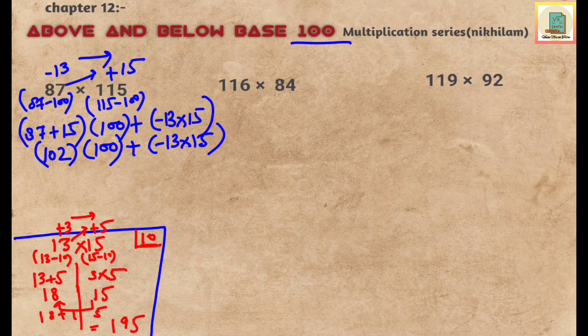So 13 multiplied by 15 gives 195, and since the sign is negative, plus minus gives minus. So we get 10200 minus 195, giving a final answer of 10005.